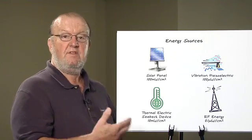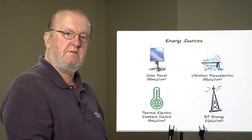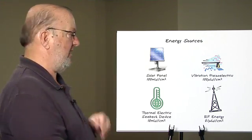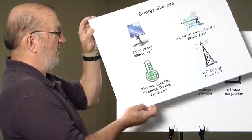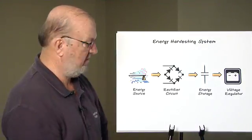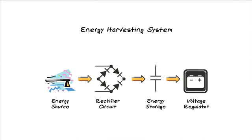An energy harvesting system needs to have your energy source and a transducer to convert that energy to electrical charge. We need to be able to store that charge in some storage element and then convert that electrical charge into a useful voltage that we can use for our sensing circuit.